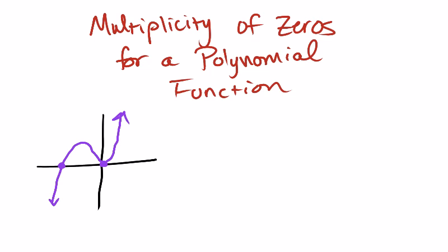Remember, zeros of a polynomial function are going to be x-intercepts. So zeros are synonymous with x-intercepts.